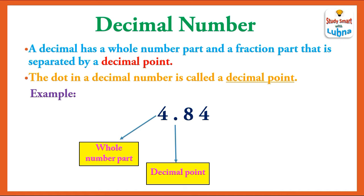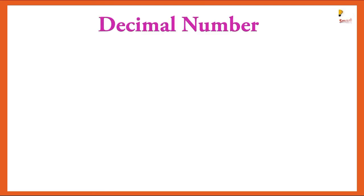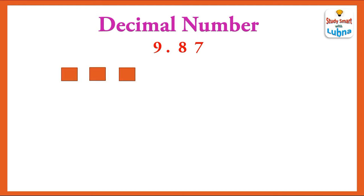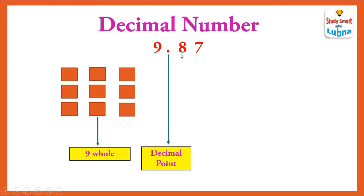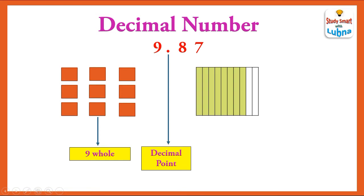The digits 8 and 4 after the decimal point are called the fraction part. Another example of a decimal number is 9.87. The 9 means 9 whole parts. After the 9 whole parts we have a decimal point, and after the decimal point the place value of 8 is tenths. We can represent it through a figure: total parts are ten and eight parts are colored — eight out of ten.